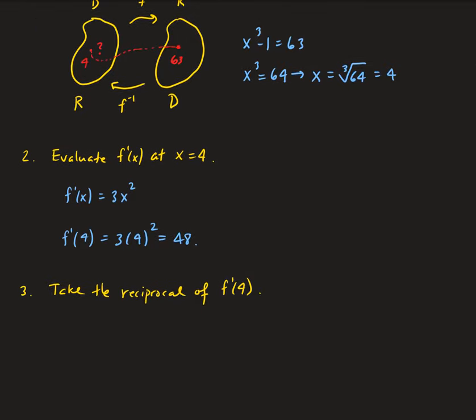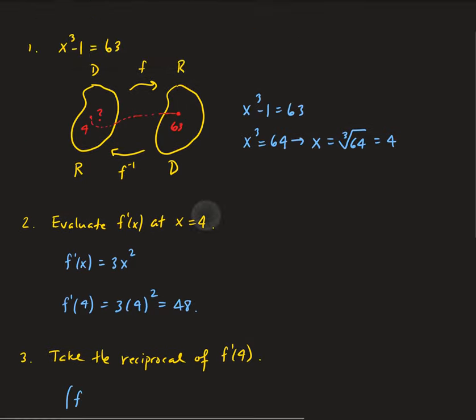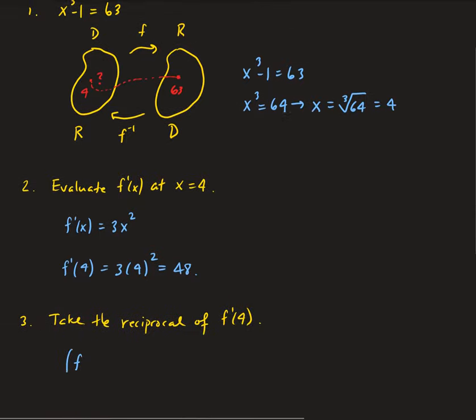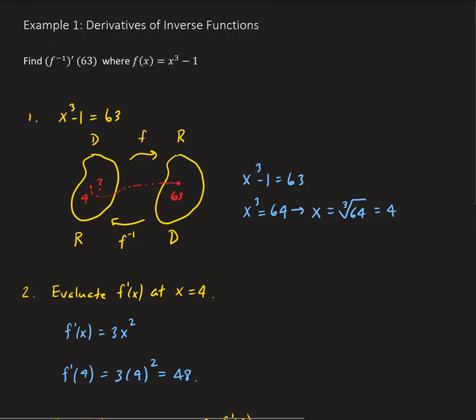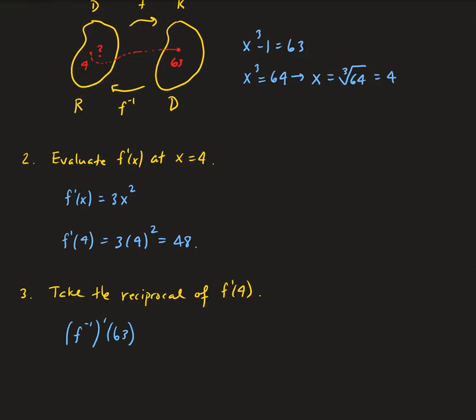So the derivative of f inverse evaluated at our point of 63 is 1 over 48.